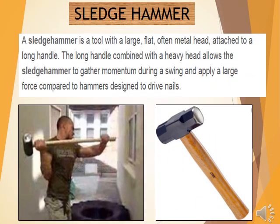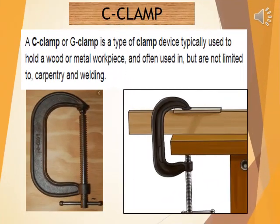The sledgehammer is a tool with a large, flat, open metal head attached to a long handle. The long handle combined with a heavy head allows the sledgehammer to gather momentum during a swing and apply a large force, compared to hammers which are designed to drive nails. The C-clamp or G-clamp is a type of clamp device typically used to hold a wood or metal workpiece, commonly used in carpentry and welding.